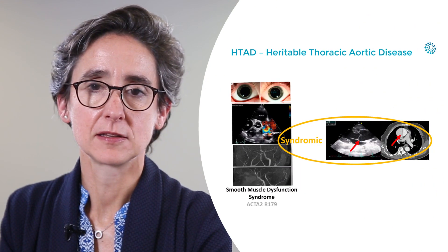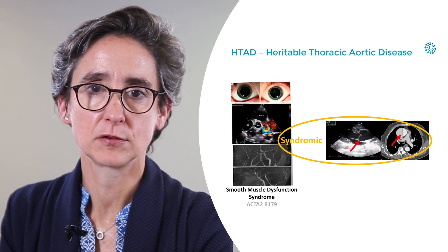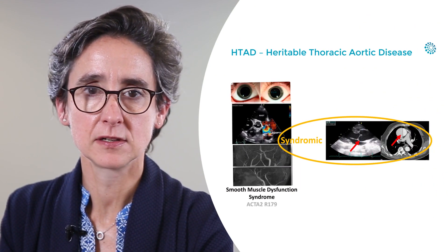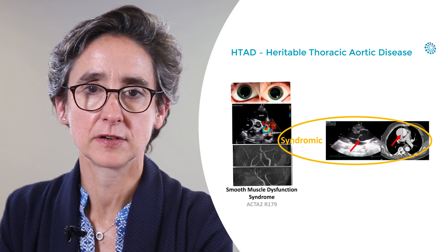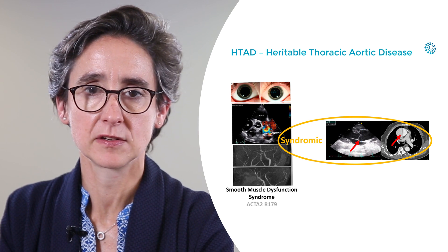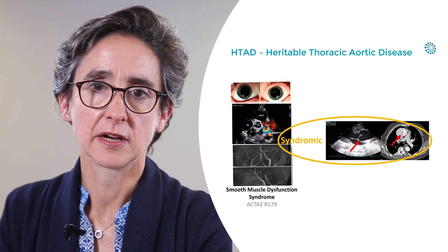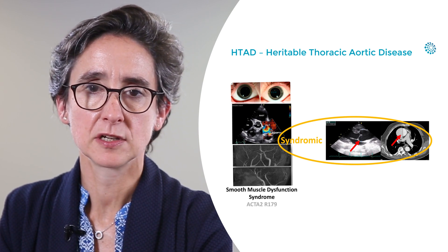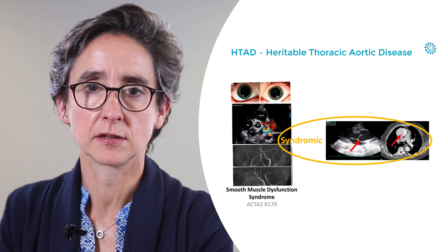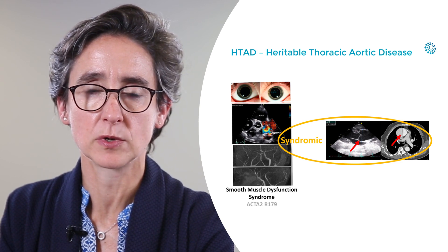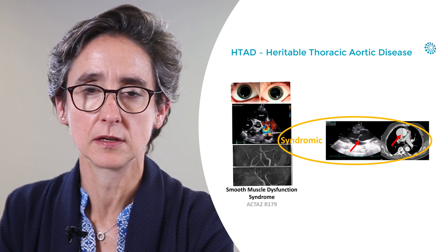Smooth muscle cell dysfunction syndrome is another rare and recently identified syndromic entity, caused by a specific mutation in the ACTA2 gene at position R179.